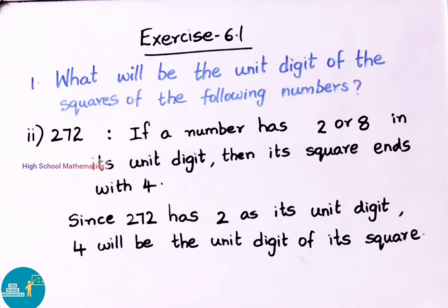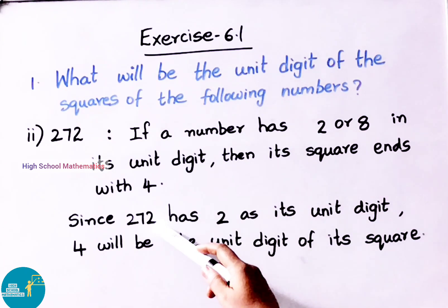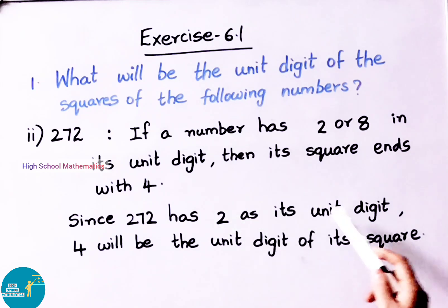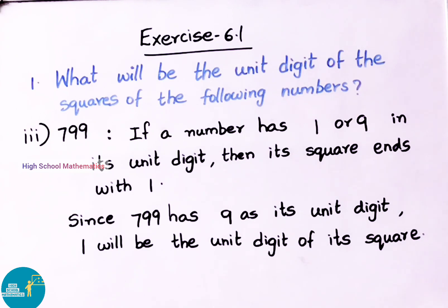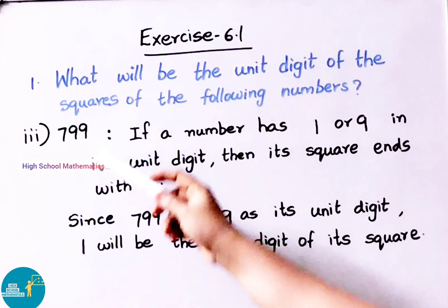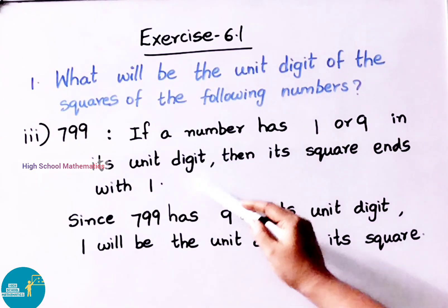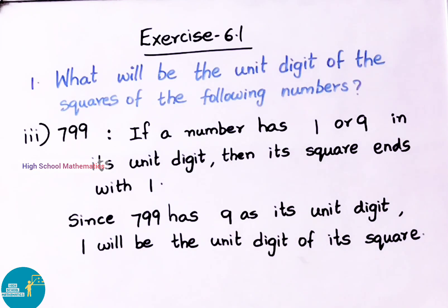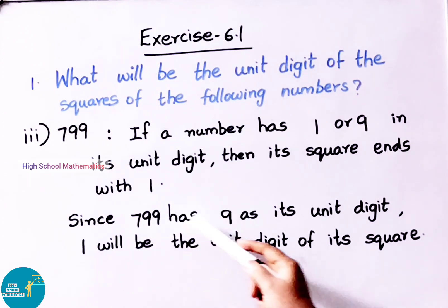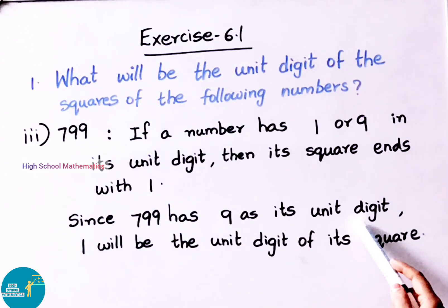See now the second sum — 272 is the given number. If a number has 2 or 8 in its unit's digit, then its square ends with 4. Since the number 272 has 2 as its unit's digit, 4 will be the unit's digit of its square. See now the third question — given number is 799. If a number has 1 or 9 in its unit's digit, then its square ends with 1. Since 799 has 9 as its unit's digit, 1 will be the unit's digit of its square.